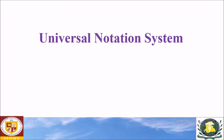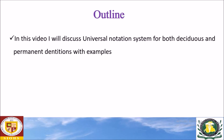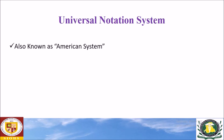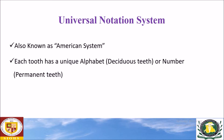Hi everyone. This video is about the universal notation system. I'll discuss the universal notation system for both the deciduous and the permanent dentitions with examples. The universal notation system is also known as the American system. In this system, each tooth has a unique alphabet in the case of deciduous teeth, or a number in the case of permanent teeth.